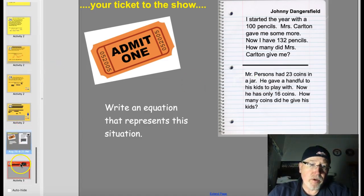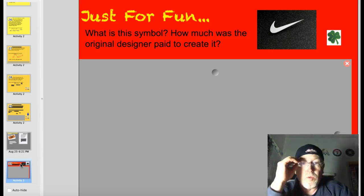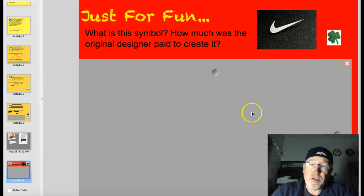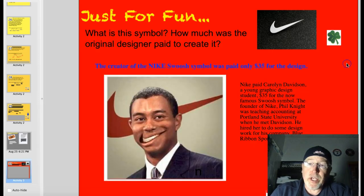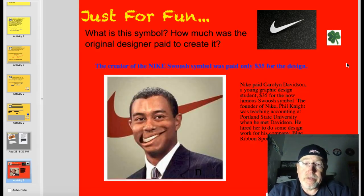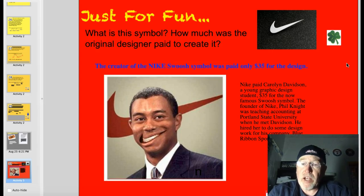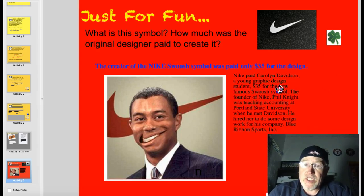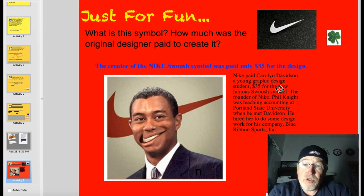Here's the trivia question. What symbol is this? Well, of course, that's the Nike swoosh, probably the most recognizable franchise mark in history. Yes, the creator was only paid $35. Kind of a cool story. Nike paid Carolyn Davidson, a young graphic designer student, $35 for the famous swoosh symbol. The founder of Nike, Phil Knight, was teaching accounting at Portland State University. When he met Davidson, hired her to do some freelance design for his company, Blue Ribbon Sports, and everybody likes it. Thanks for listening. Bye.